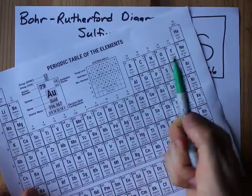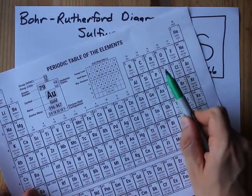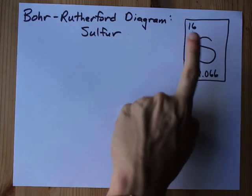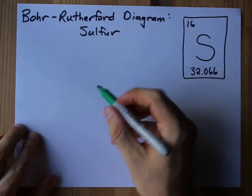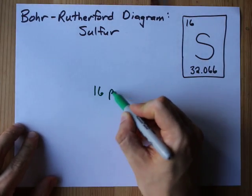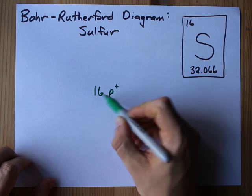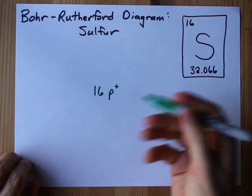On my periodic table, and yours too, Sulfur is the 16th element. The atomic number is 16, which means I have 16 protons in the nucleus. I write 16 P+ to represent that.